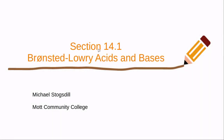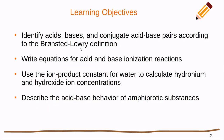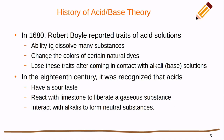Hello, everybody. In this video, we're going to be covering section 14.1, Bronsted-Lowry acids and bases. We've got quite a few learning objectives this week in this section. We're going to identify acids, bases, and conjugate acid-base pairs according to Bronsted-Lowry's definition. We're going to write equations for acid and base ionization reactions. So I want to get into the history a little bit of acid-base theory and see why this is so important in chemistry — it's really an old thing that we've been studying for quite a while.